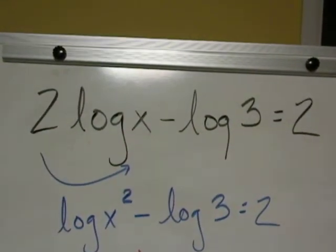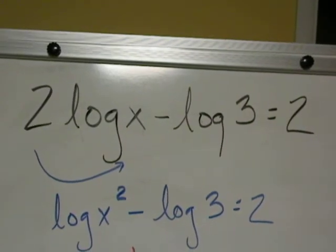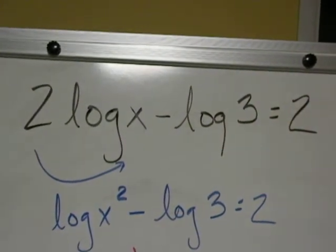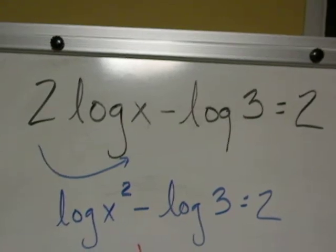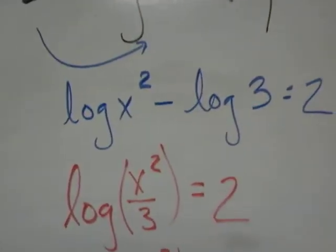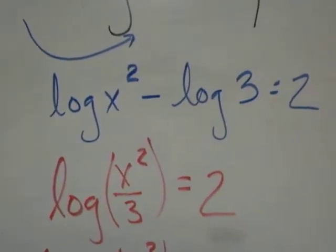So now I have log of x squared minus the log of three equal to two. The subtraction will become division through the quotient property. So it'll be the log of x squared over three is equal to two.